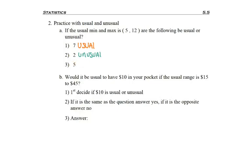What about five? Since five is one of the edge points, we talked about on the prior slide that if a value equals an endpoint it's still considered usual. If five to twelve are acceptable numbers, then five is an acceptable number. Now let's look at example B.